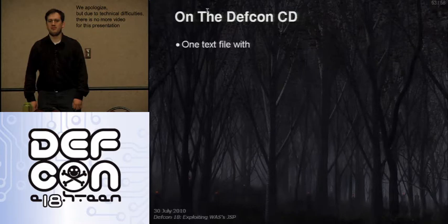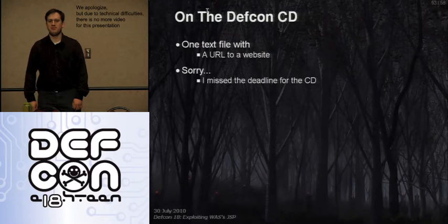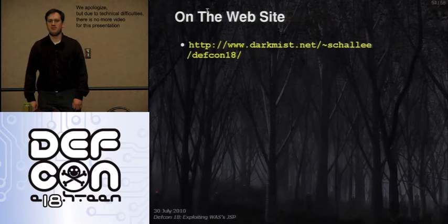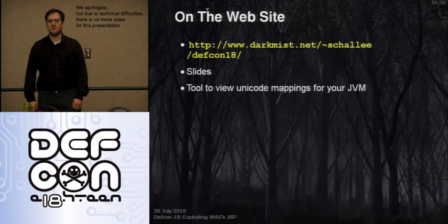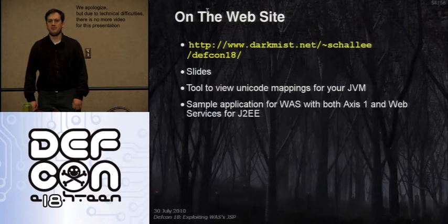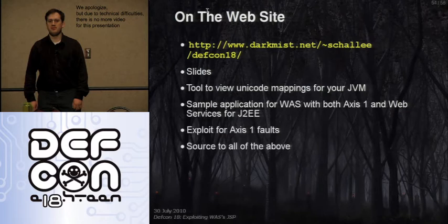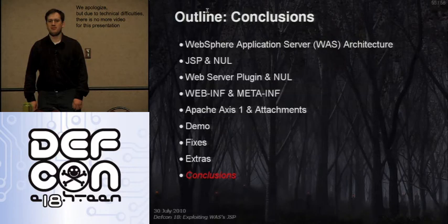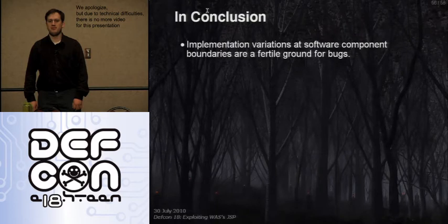On the DEF CON CD there's one text file with a URL to a website because I missed the CD deadline. On the website I will be uploading slides, a tool to map your JVM which will list all different byte combinations for UTF-8, go through them, show you what they're being converted to and what they do with the file system — it also reveals some other issues with the IBM JVM. There's also a sample application with URLs to try this yourself, and an exploit for the Axis 1 faults with source code for all of the above.